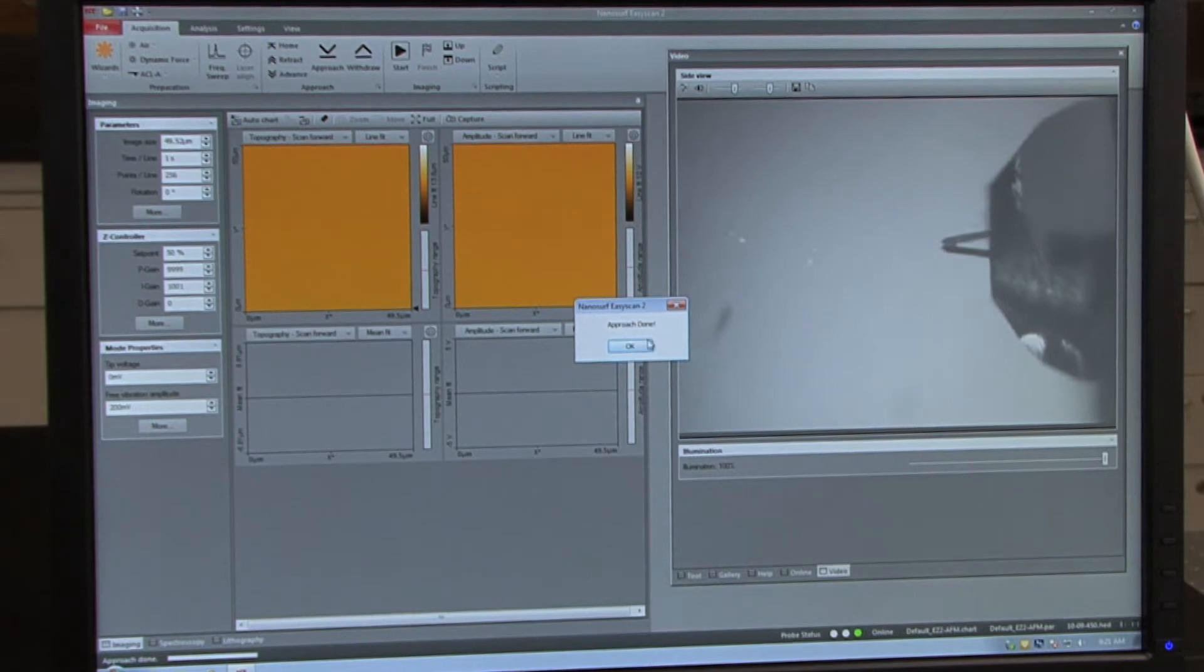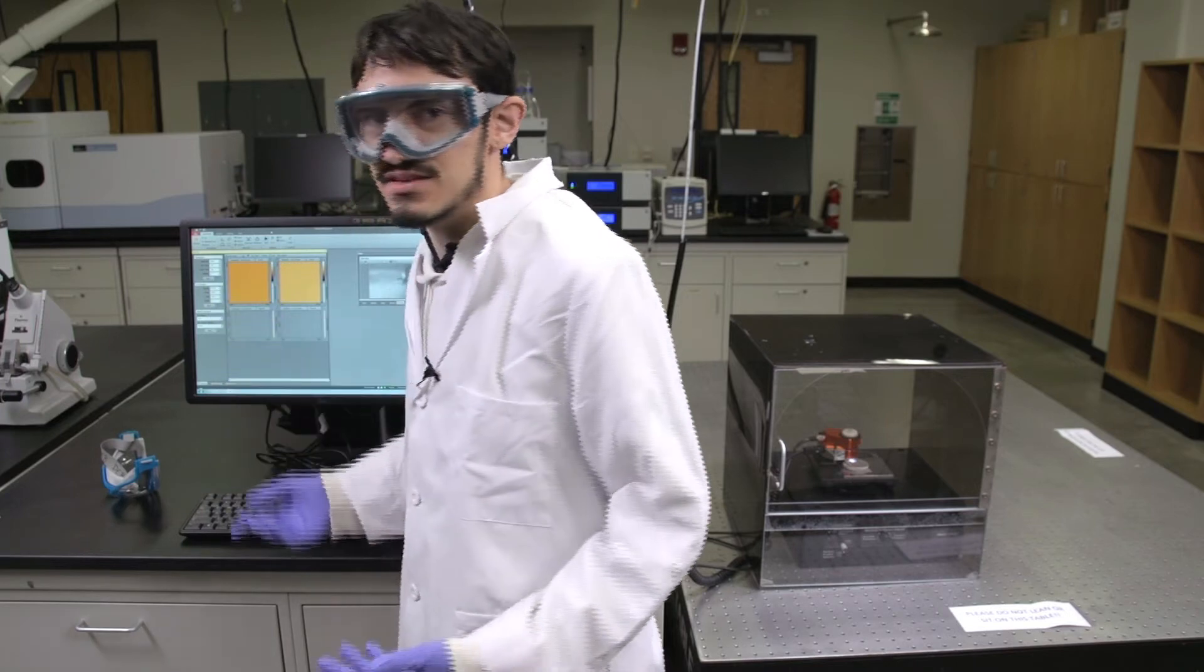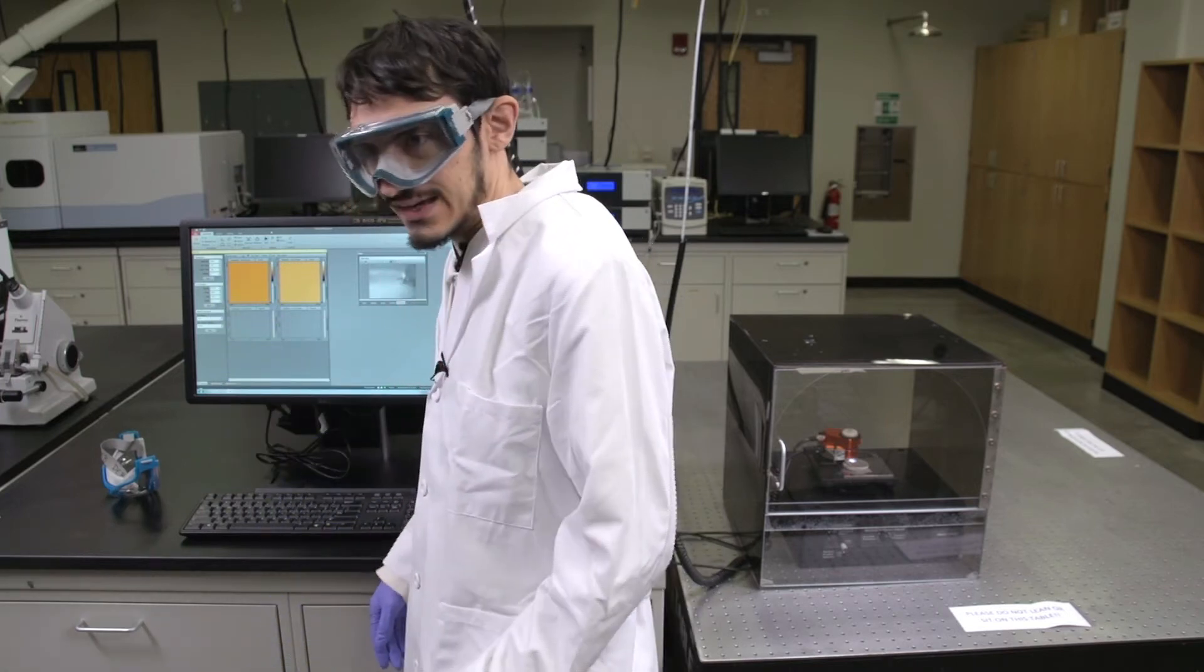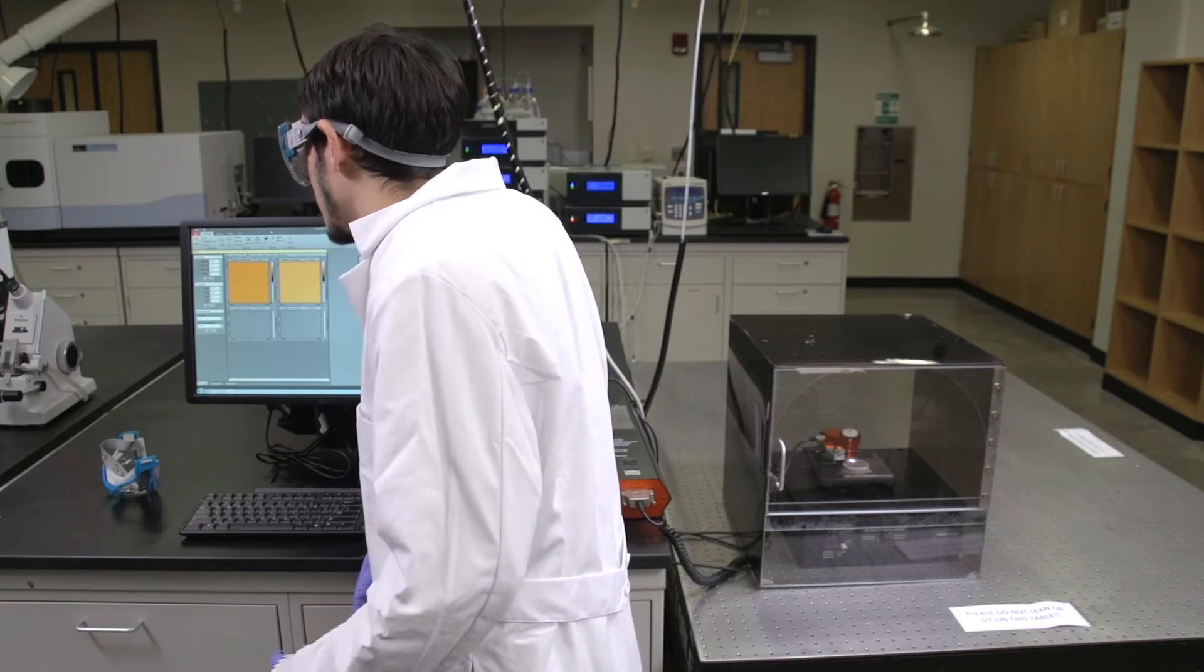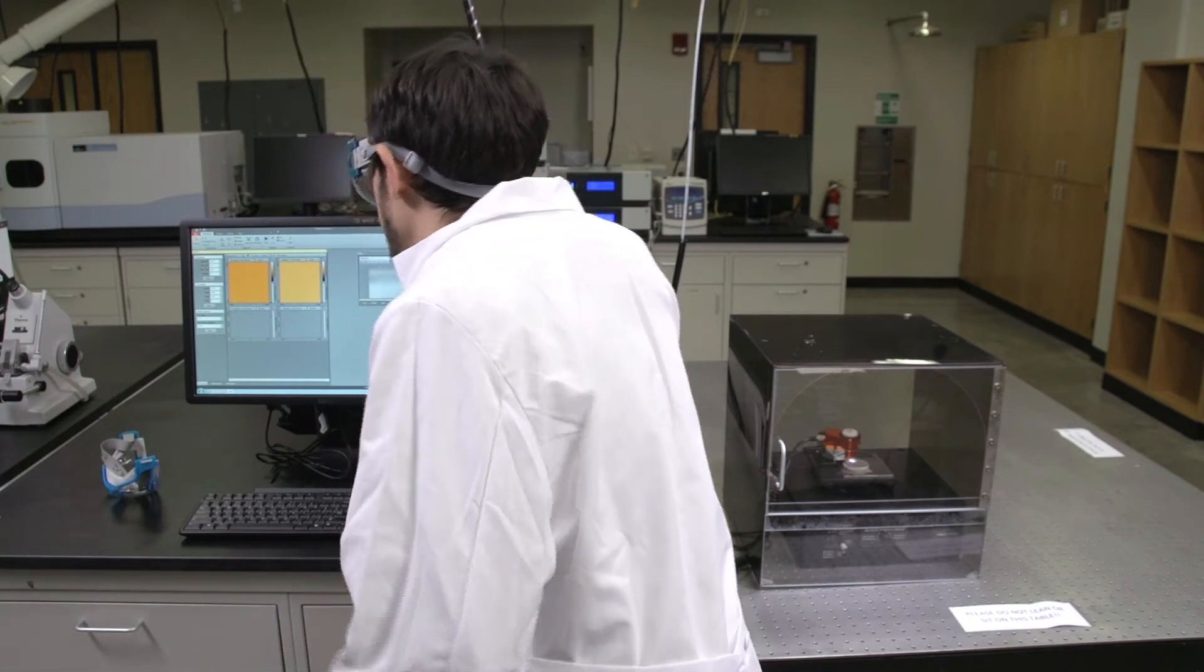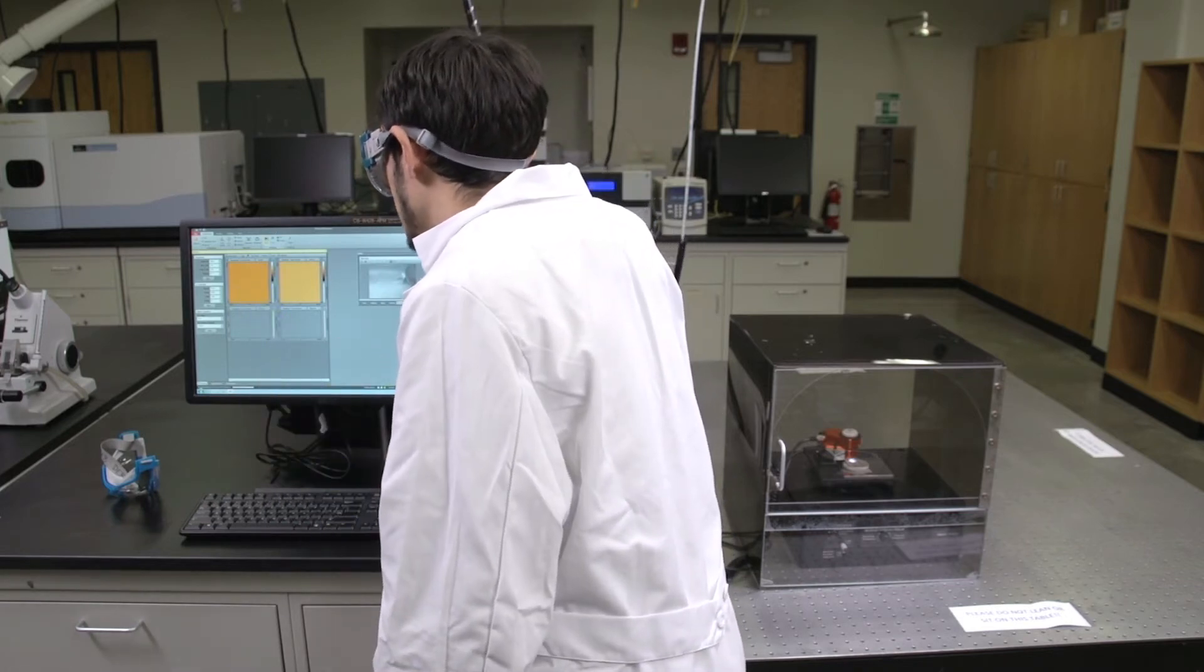Once the approach is complete, click OK and you are now ready to begin imaging. Prior to clicking start to take the image, be sure that the image size is set to 50 micrometers, that the time per line is set to one second, and that the number of points per line is set to 128. Once these parameters are set on the left hand side of the software, click start to begin imaging.